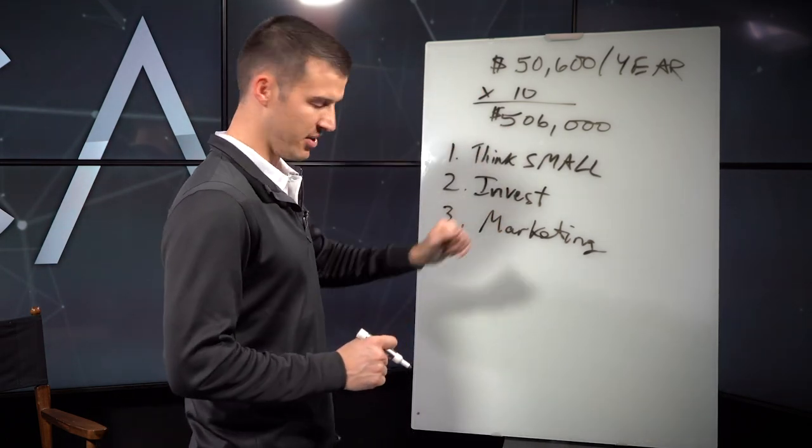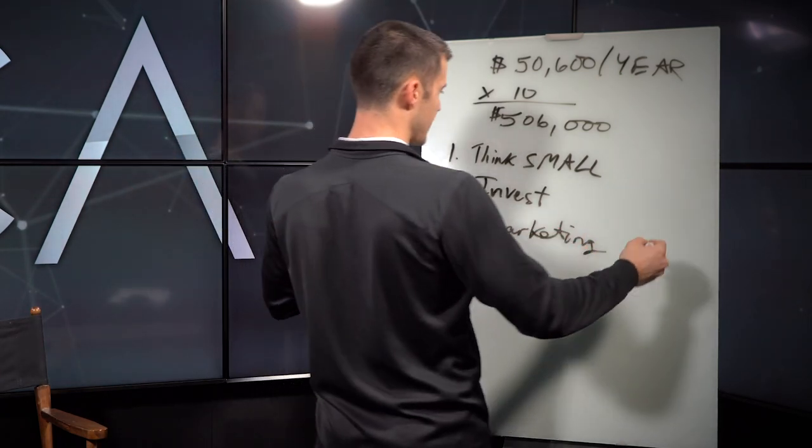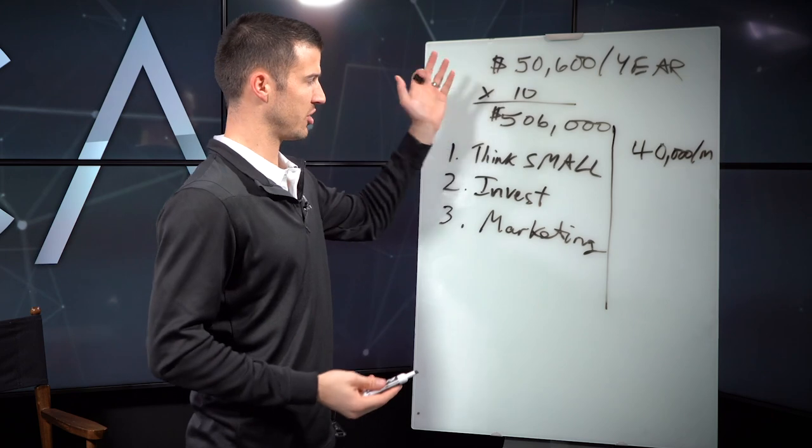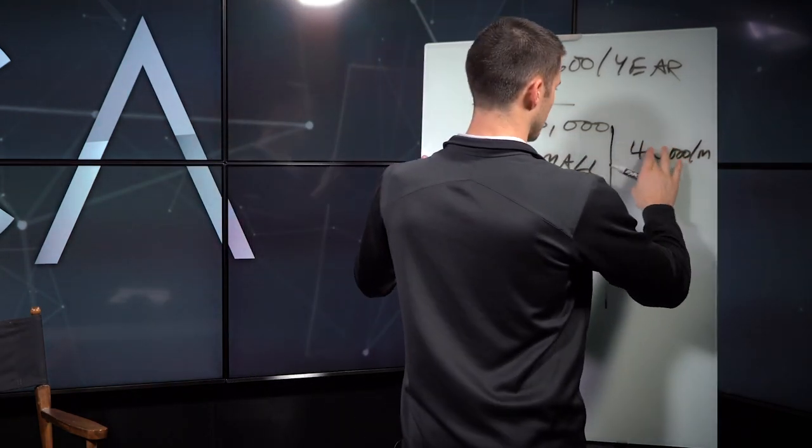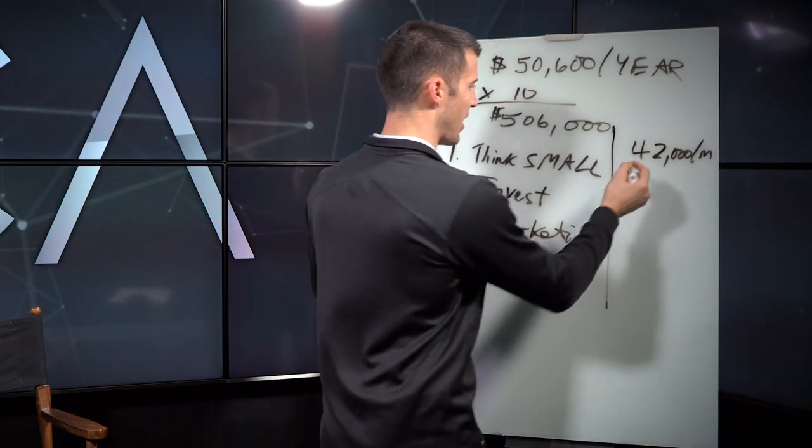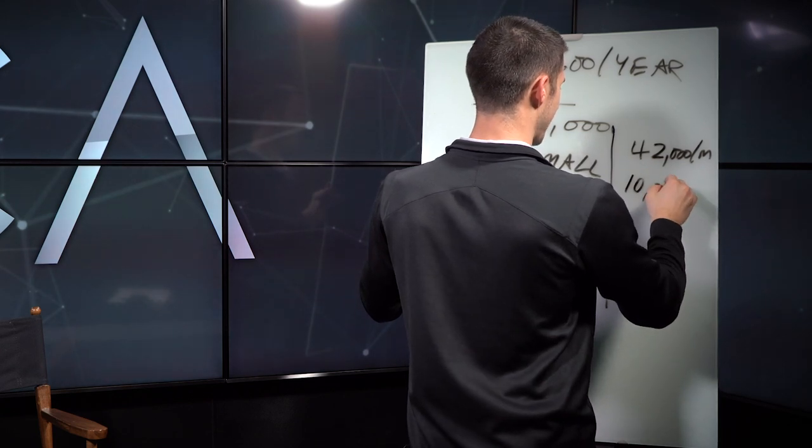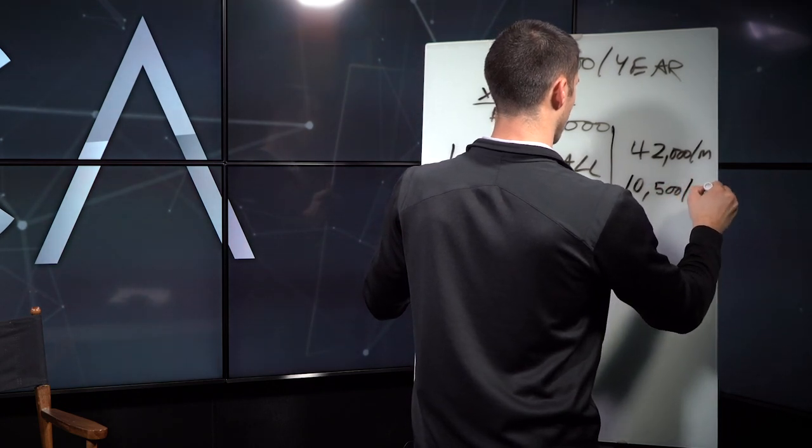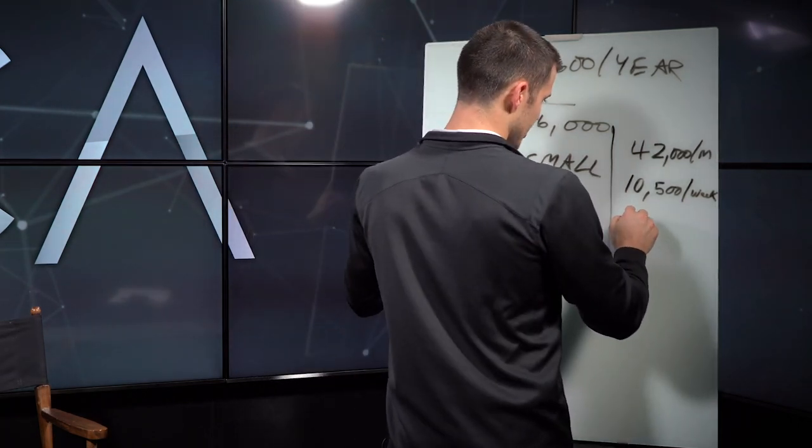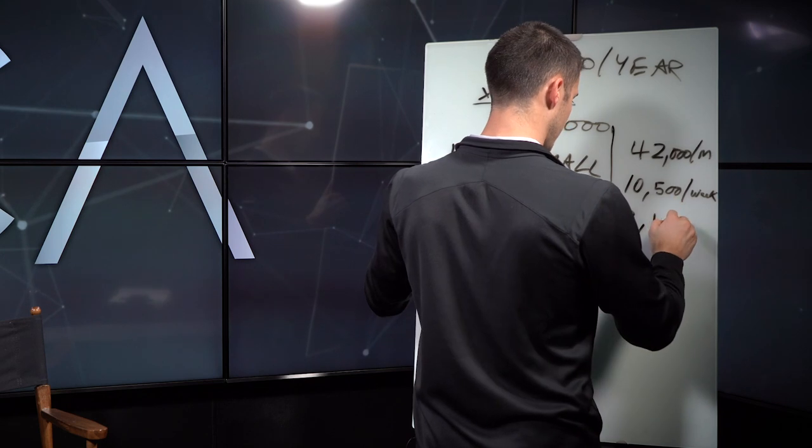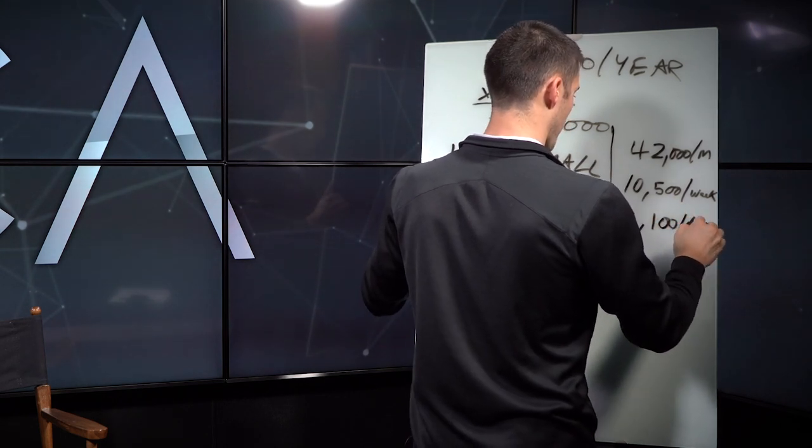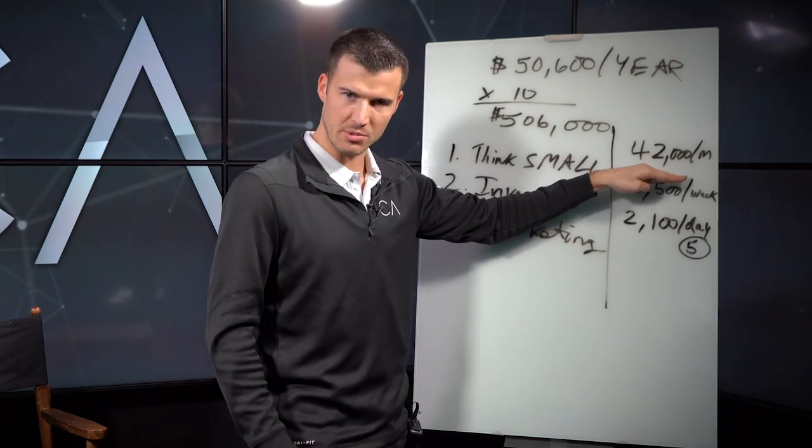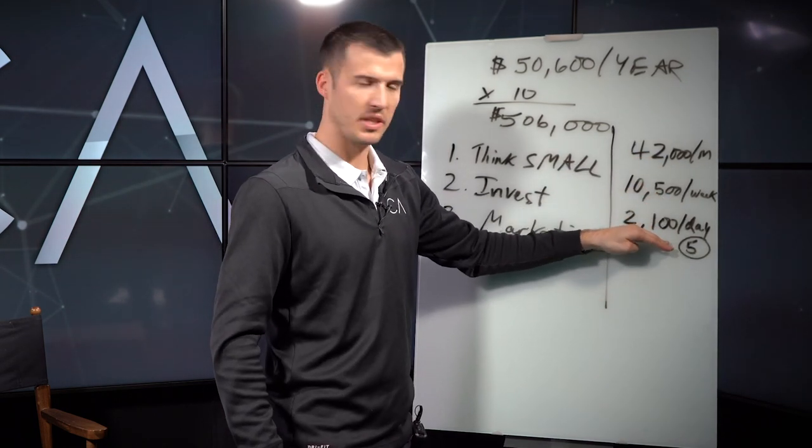When you think about a half a million bucks, what's that look like for you? Because if you break it down, that's about $40,000 per month. Let's call it $42,000 per month. That is $10,500 per week. That is $2,100 per business day. This number seems huge, this number seems ridiculous, that seems a little better, but that seems within reach.